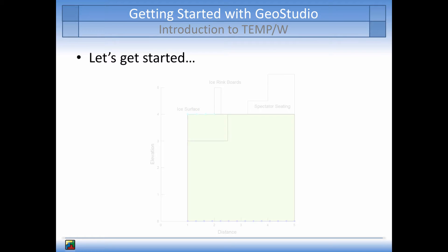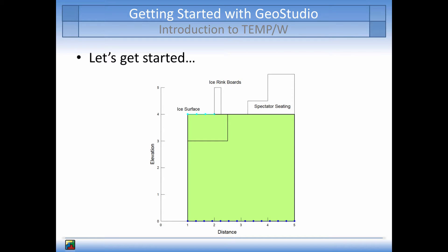Let's get started. Here is a schematic of an ice skating rink that is being installed. The objective of our simulation is to compute the depth of the frozen zone that will develop beneath the ice surface if the temperature of the ice is maintained at minus five degrees Celsius for a period of 100 days, or approximately three and a half months. Outside the ice surface, the floor in the building is assumed to be insulated so that no heat can cross over this area.